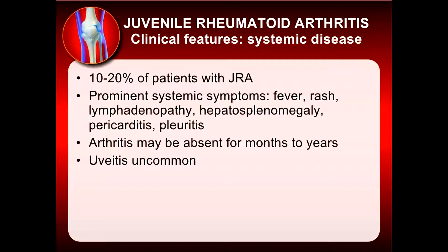Some children present with the systemic disease variety — about 10 to 20 percent of JRA patients behave like this. They develop high-grade fever for many days, weeks, and months. They develop rash, lymphoid enlargement, enlargement of liver and spleen, maybe pericarditis and pleuritis. A characteristic feature is that joint involvement as arthritis is not seen clinically for even months. They don't develop uveitis. If the patient eventually develops joint involvement, the diagnosis of systemic JIA is still applicable.